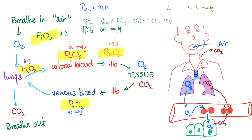Your atmospheric pressure is 760 mmHg. Oxygen is about 21% of atmospheric air — multiply 21% by 760 and you get approximately 150. That value is called PIO₂. When this oxygen enters your lungs, they are wet and full of water vapor, so you subtract the water vapor and end up with about 105 mmHg — this is the oxygen inside your alveoli, called PAO₂ (big A for alveolar). When oxygen moves into the arterial blood, it's called PaO₂ (small a for arterial), and it's approximately 100 mmHg.